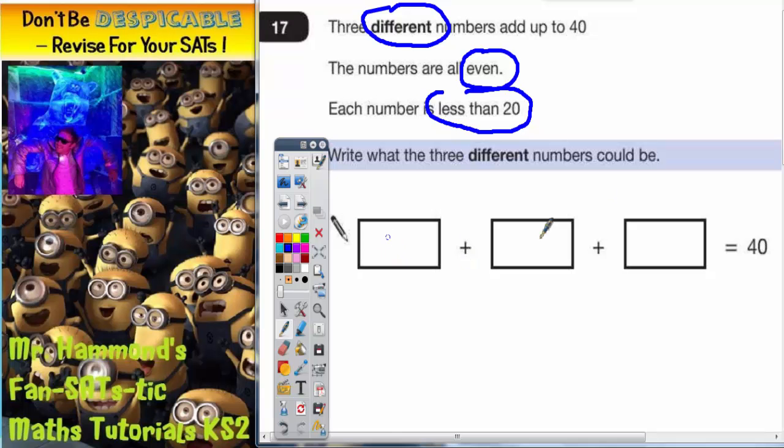So mystery number plus mystery number plus mystery number equals 40. Best thing to do first is to actually write down what numbers I could possibly be using. So they've all got to be even and they've all got to be less than 20. So why don't I write down all the even numbers less than 20.